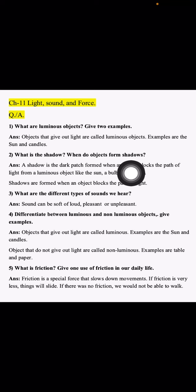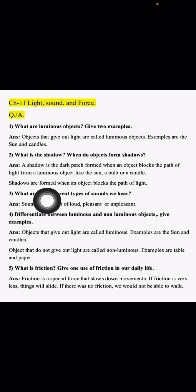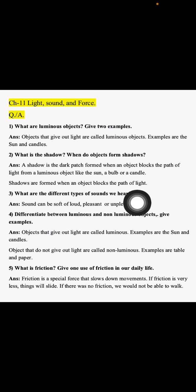Shadows are formed when an object blocks the path of light. A shadow forms only when light is coming from a luminous object and some object comes in between and blocks it. See your handwriting should be very neat and clean and check all the spellings and write down correctly.